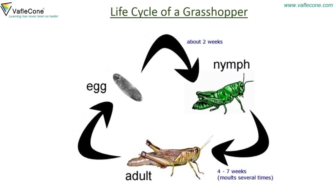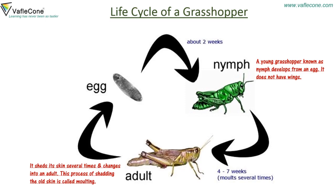Life cycle of a grasshopper: an egg turns into a nymph about two weeks later. A young grasshopper, known as a nymph, develops from an egg. It does not have wings. It sheds its skin several times and changes into an adult. This process of shedding the old skin is called molting.